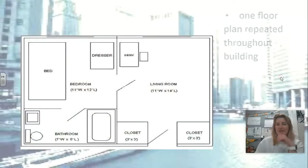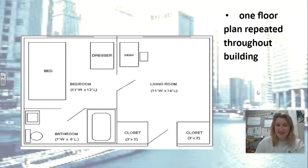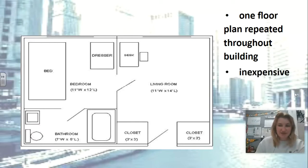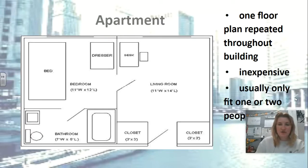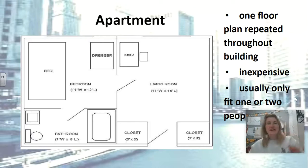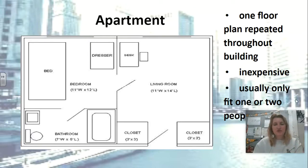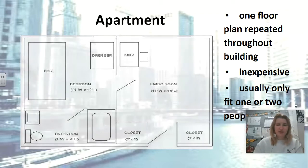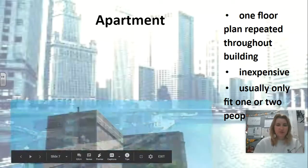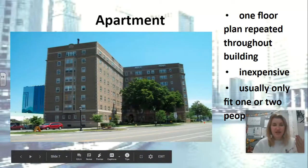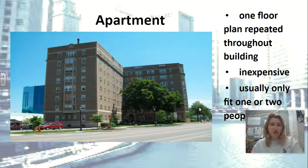You probably recognize this one. It's really small — the bed takes up most of the room. One floor plan repeated throughout the entire building, very inexpensive, and usually only fits one or two people. Apartments. If you wanted to build an apartment, you could get really awesome views. Basic apartments are in a building where the layout is repeated over and over again throughout, so everybody kind of gets the same thing.